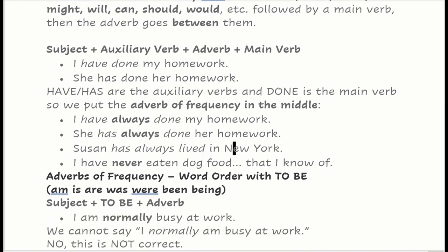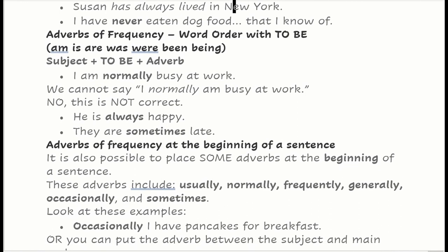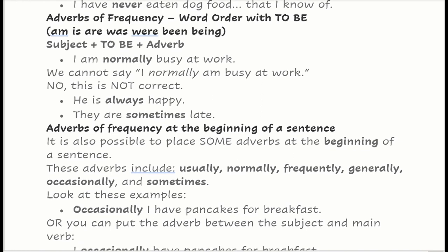Adverbs of frequency — word order with verb to be. Verb to be: is, am, are, was, were, being, been. The adverb comes after the verb to be. I am normally busy at work. We cannot say 'I normally am busy at work.' He's always happy. They are sometimes late.